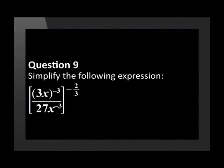Question 9. Simplify the following expression. In square brackets, on the top of the fraction in round brackets is 3x to the power of negative 3, and at the bottom is 27x to the power of negative 3, all to the power of negative two thirds.